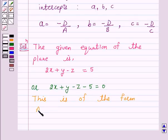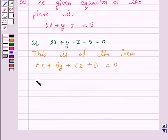Ax plus By plus Cz plus D is equal to 0. Here, we have A is equal to 2, B is equal to 1, C is equal to minus 1 and D is equal to minus 5.